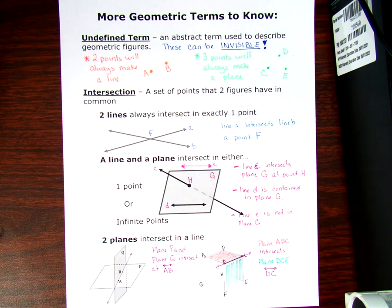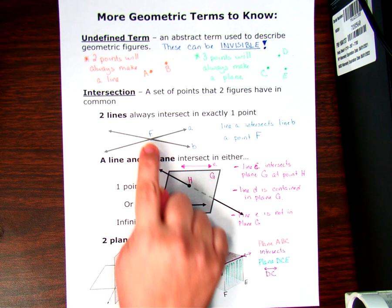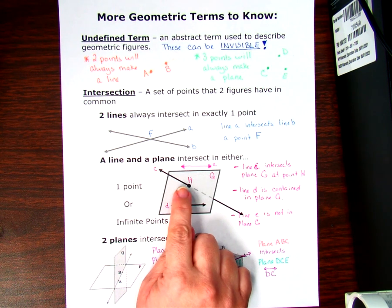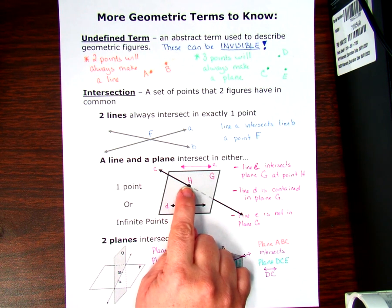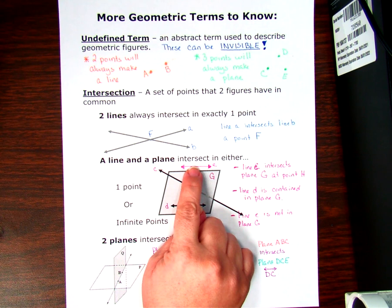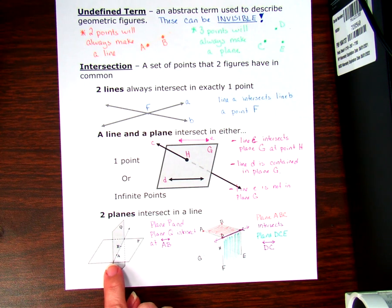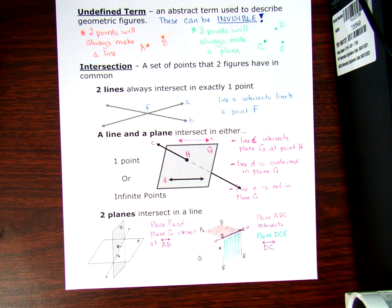In the last video, we talked about what an undefined term is and how different figures can intersect. Two lines will always intersect in a point. A line and a plane can intersect in a point, or all the points on the line could be in the plane, or the line could be not intersecting the plane at all. Two planes will always intersect in a line.